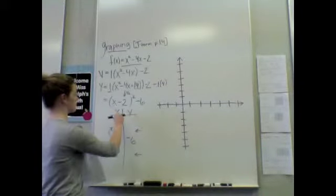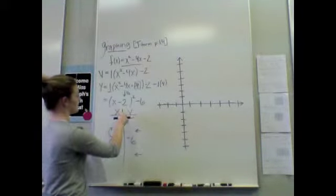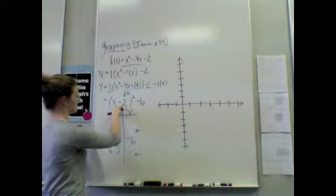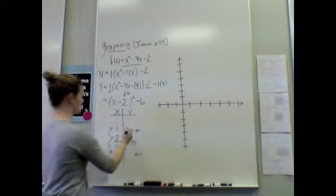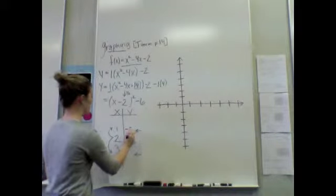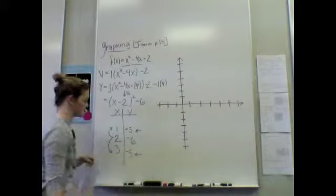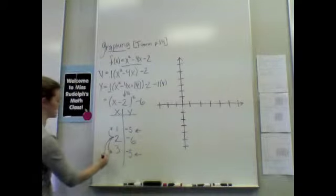So, if I were to plug 1 in, we have 1 minus 2, that will be negative 1. Negative 1 squared is just 1, and 1 minus 6 will be negative 5. These will have the same y coordinates. Alright, so if we go over now again...